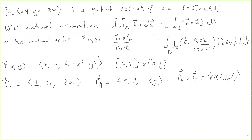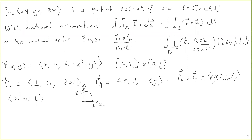Now I want to check whether this cross product gives the outward pointing normal vector. I pick one point — say x = 0 and y = 0. Then the cross product becomes (0, 0, 1). Looking at a cross section of the paraboloid with x and z axes: at x = 0, y = 0, z = 6, the normal vector (0,0,1) points upward, which is the outward direction. So rx cross ry does give us the outward pointing normal vector.